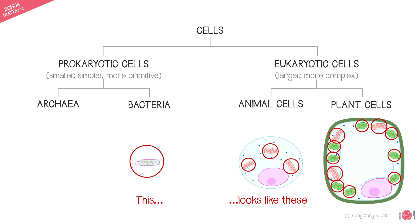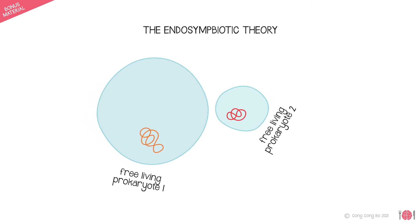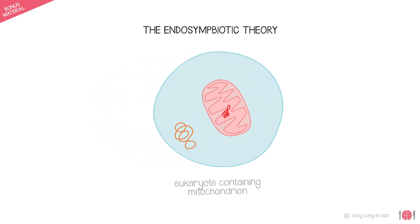And so, at the turn of the 20th century, scientists proposed the endosymbiotic theory, which suggested that certain membrane-bound organelles of eukaryotic cells are descendants of formerly free-living prokaryotes. Fascinating stuff, right?